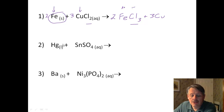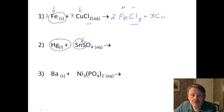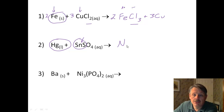Let's try number 2. We look at mercury and tin. Tin is higher on the activity series, and since it's already with the sulfate, no reaction happens here for number 2.